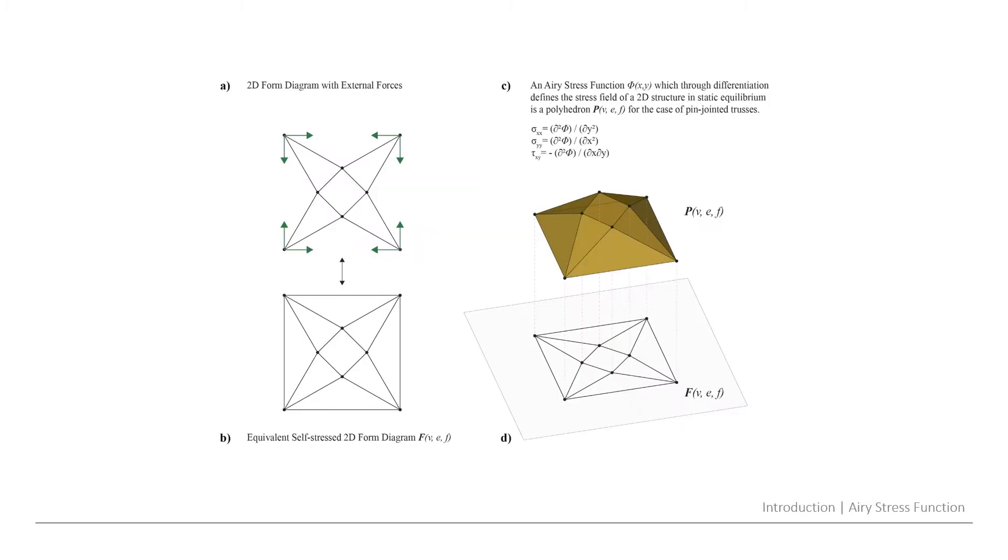Some words about the Airy stress function. Basically for a 2D truss in static equilibrium, the Airy stress function is a surface in three-dimensional space which through differentiation can define actually the stress field of our 2D structure. But for the case of pin-jointed trusses the Airy stress function rather than being smooth is actually plain faced.